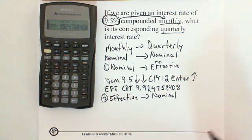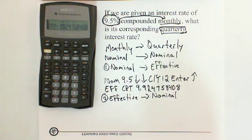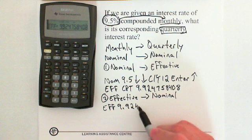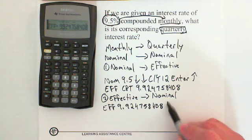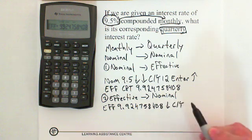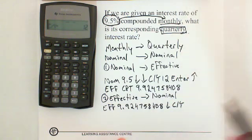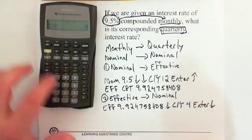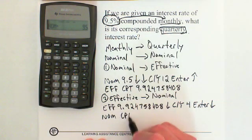The new nominal rate is quarterly. So leave EFF as calculated, scroll down to CY, and change the CY now to 4 for quarterly — because that's what we want. Type 4, Enter, then push the down arrow back to NOM. At NOM, we push Compute.